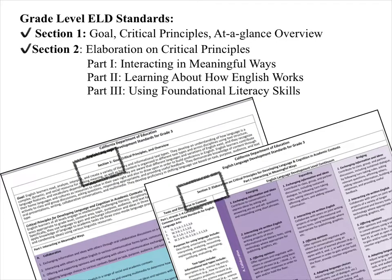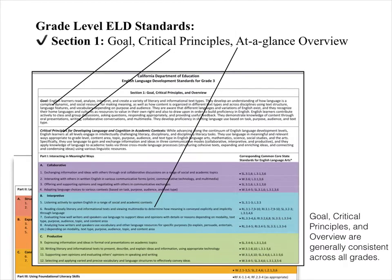Now let's look at the actual grade-level ELD standards. If you look at the top, you'll see Section 1 and Section 2. Section 1 is generally consistent across all grades. It contains a goal — what teachers want for their ELs — and critical principles.